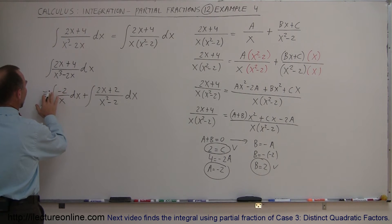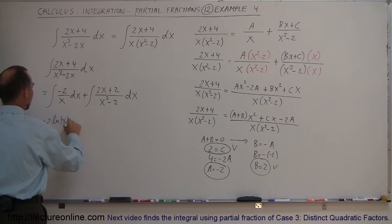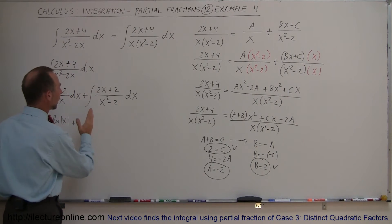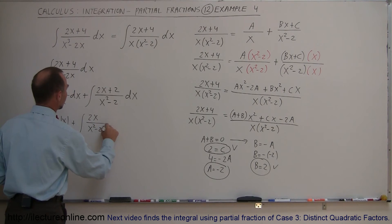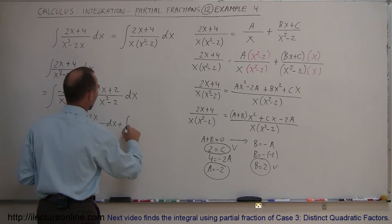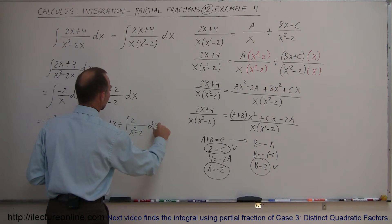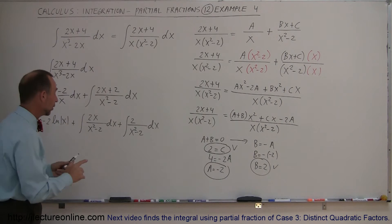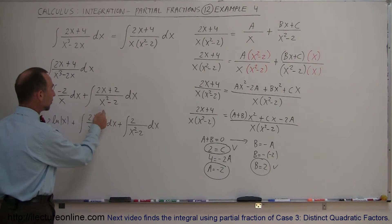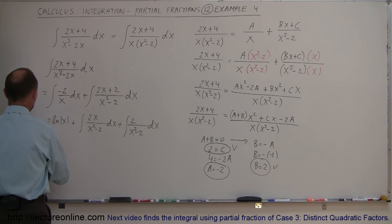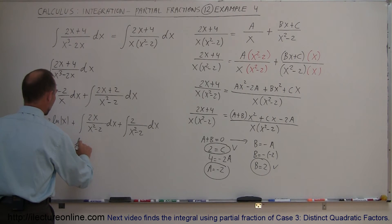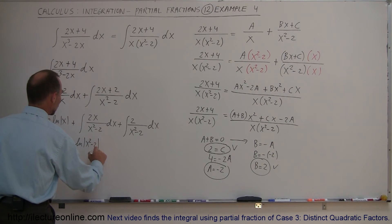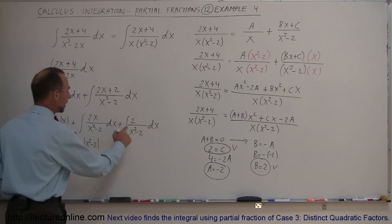For the first integral, we take the negative 2 outside the integral sign, leaving dx over x, which integrates to negative 2 times the natural log of x. For the second integral, we split it into two separate integrals: the integral of 2x over x squared minus 2 dx, plus the integral of 2 over x squared minus 2 dx. The first of these integrates nicely because the differential of x squared is 2x dx, giving the natural log of x squared minus 2.